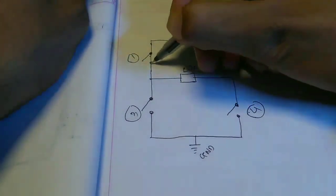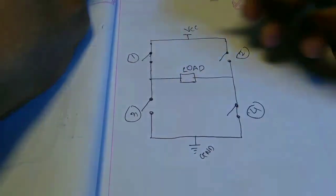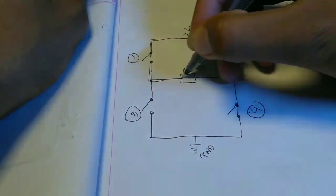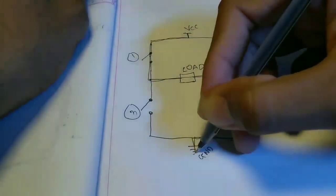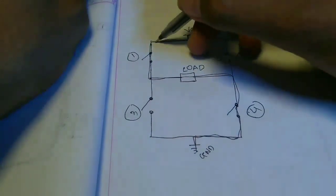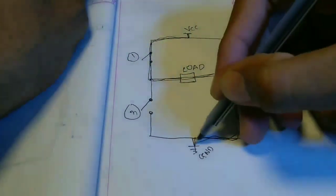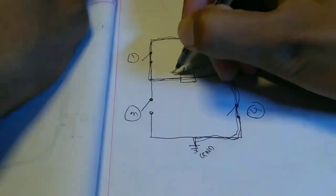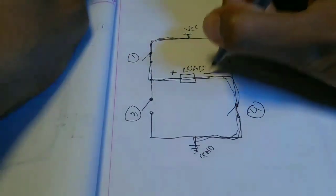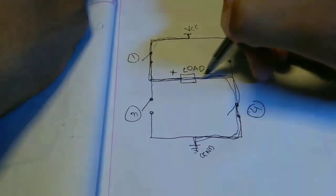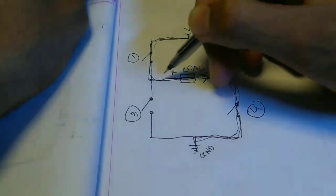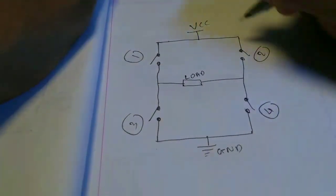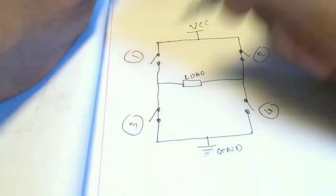If we turn on switch one and four, current flows in this direction. Here the left side terminal of the load is positive and the right side is negative.